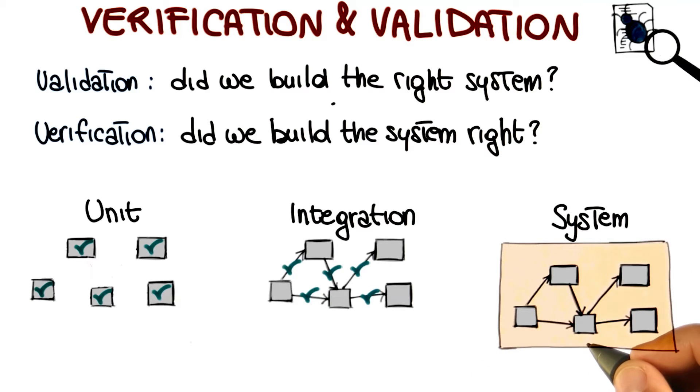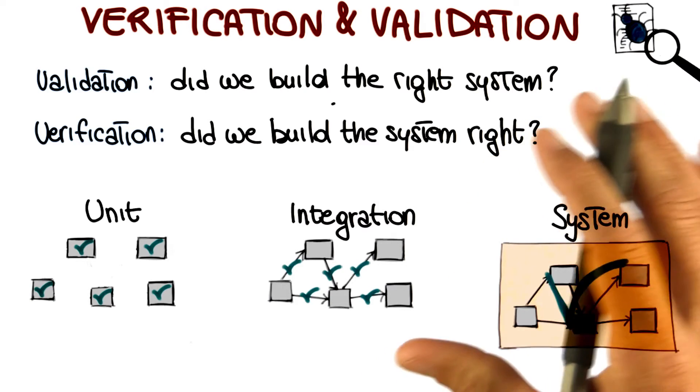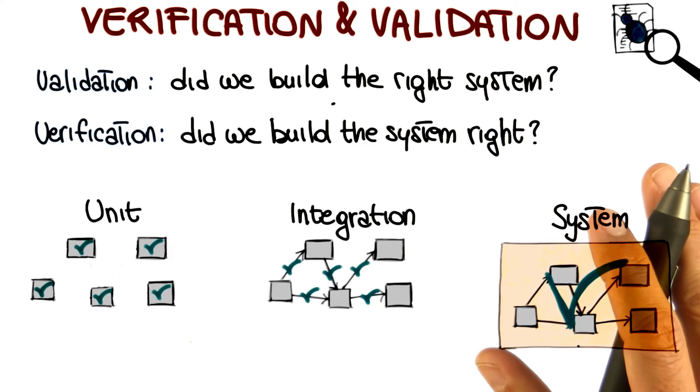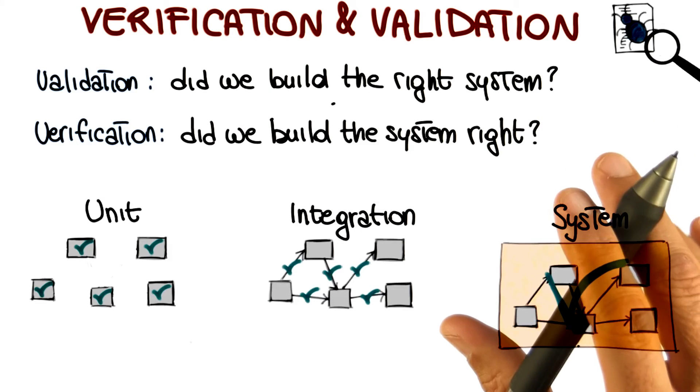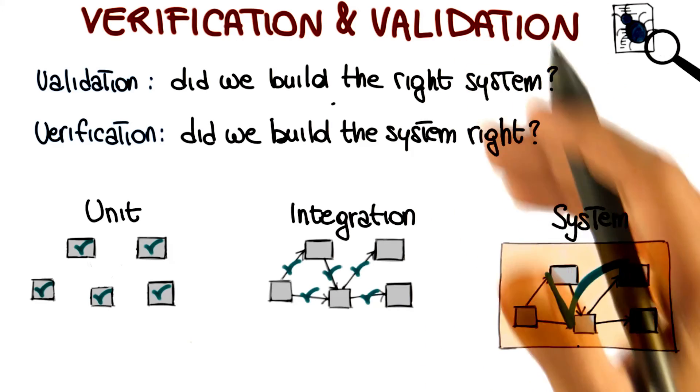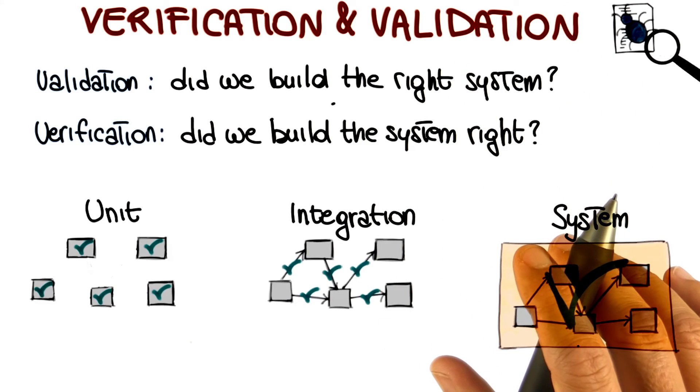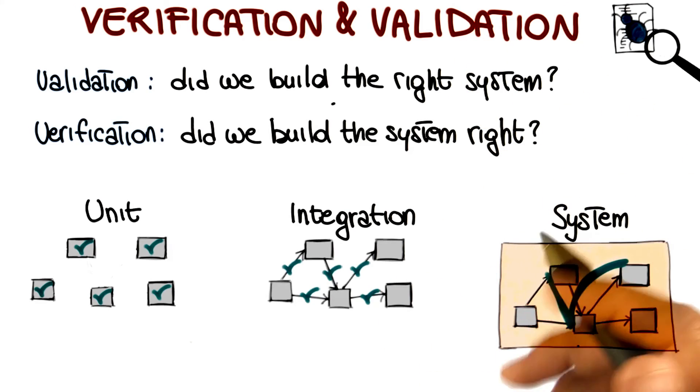And finally, there is system testing, in which we test the system as a whole. We want to make sure that all the different pieces of the system work together in the right way. This is also the level at which we will apply validation and some other testing techniques like stress testing or robustness testing.